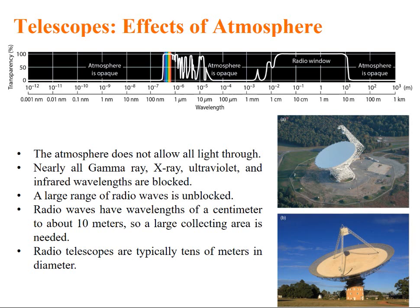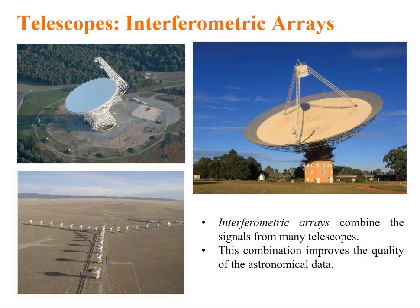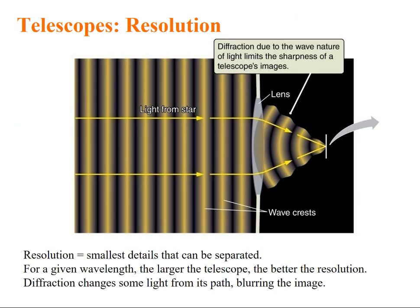What are radio waves? Radio waves have the wavelength of centimeters to about 10 meters. So, definitely, there should be a large collecting area needed. Radio telescopes are typically of tens of meters in diameter. These are some interesting pictures showing radio telescopes. And we can also have array of radio telescopes so that we get interferometric signals which can be used in a combination to understand the astronomical data better. So, the combination improves the quality of the astronomical data.